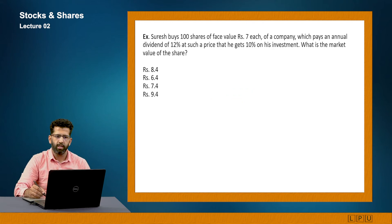Next question. Suresh buys 100 shares of face value rupees 7 each of a company which pays an annual dividend of 12% at such a price that he gets 10% on investment. What is the market value of the share? Now, as per company's claim, he is getting 12% dividend, but actually he is getting only 10%. So face value of the share is 7 rupees. If he is getting less amount of money, that means the share value will be more. The share value will be more, that is why percentage has decreased.